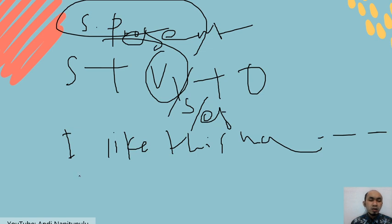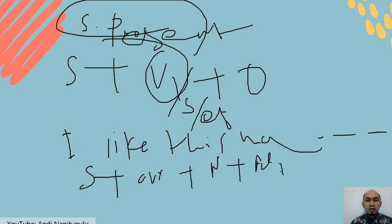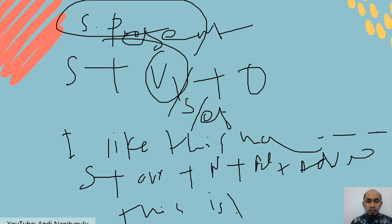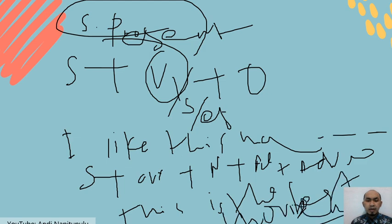For example: 'This is the best movie.' — that's the nominal form of simple present tense. Now let's talk about simple past tense.